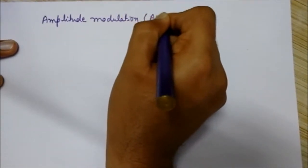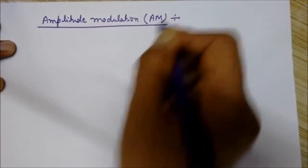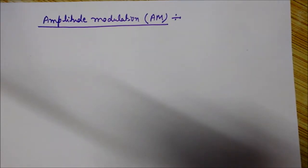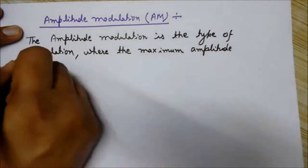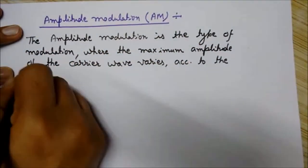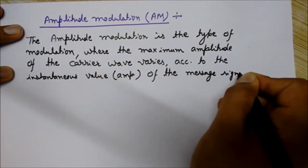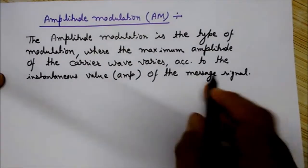Amplitude modulation, called AM, refers to the amplitude of a signal — that is, the magnitude of the signal. Amplitude modulation is the type of modulation where the maximum amplitude of the carrier wave varies according to the instantaneous amplitude of the message signal. The message signal is also known as the modulating signal or the baseband signal.